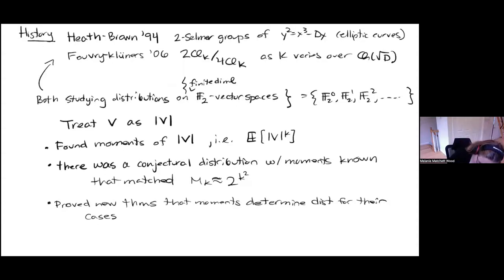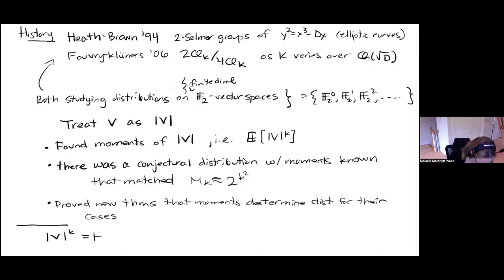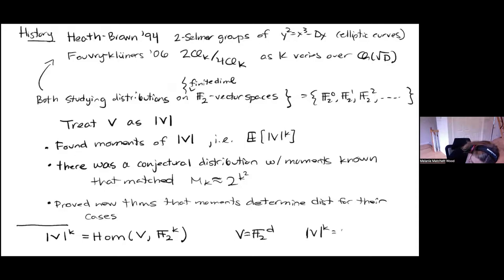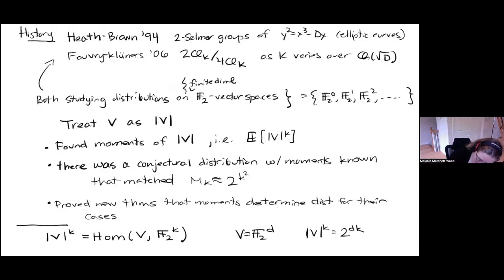What has turned out to work very well is that when you take the k-th power of the size of an F_2 vector space V, it's also equal to the number of homomorphisms from V into F_2^k. This is not hard to see: if V is F_2^d, then |V|^k = 2^{dk}, which is also the number of homomorphisms from V into F_2^k — you just choose where each basis vector goes. This kind of structure recognizes the group structure of V and turns out to generalize quite well.